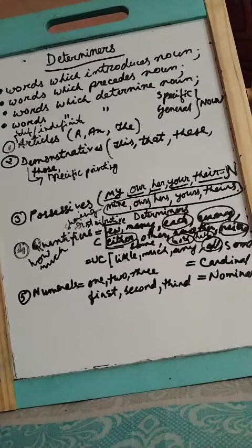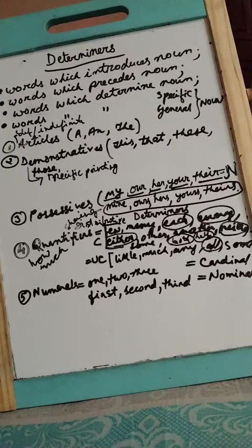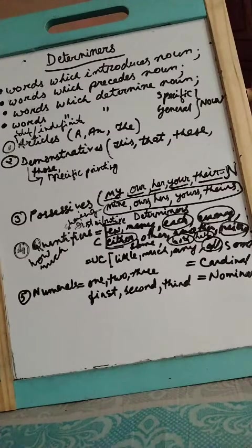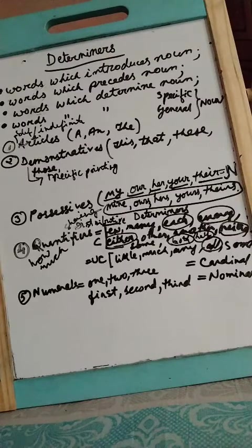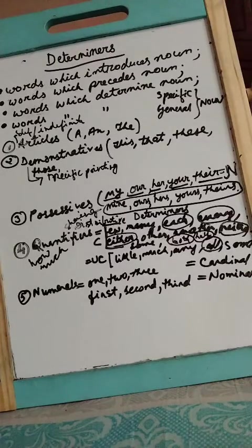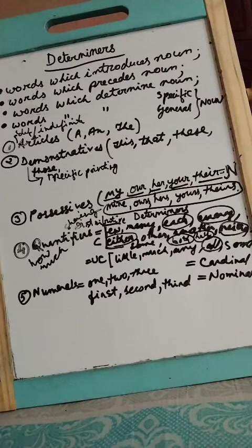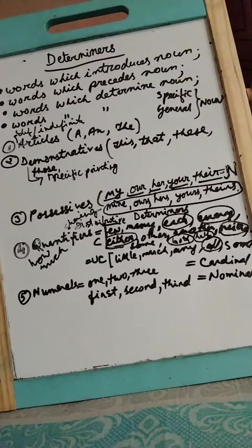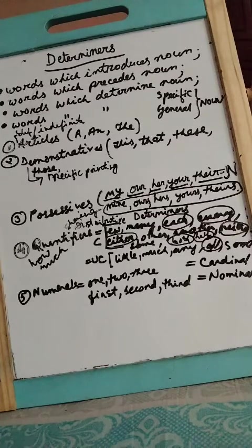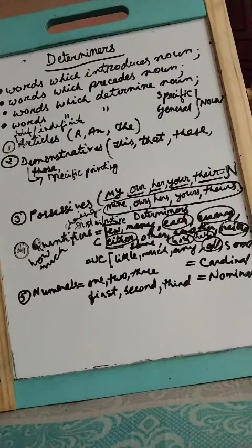Some are countable, some are uncountable. For example, little, much, any - these are for uncountable. And countable are few, many, each, every, either, other, another, neither - these are countable. Exception: some can be used with both countable and uncountable. There is not much milk left in the bottle - milk is uncountable.